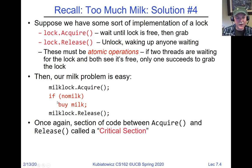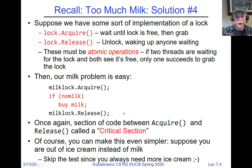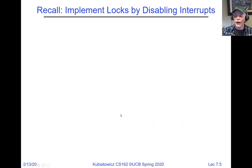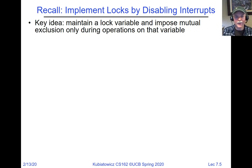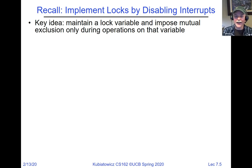To implement locks by disabling interrupts: the key idea is we don't use disable/enable directly as acquire/release — if you acquired the lock and spent a half hour getting milk, interrupts would be disabled for a half hour, which is bad. Instead, we make the lock a variable in memory and use disabling/enabling of interrupts to help implement the lock. In our acquire method, we have a variable 'value' which can be free or busy. Acquire disables interrupts, checks if somebody has the lock; if not, sets value to busy, re-enables interrupts, and exits into the critical section.